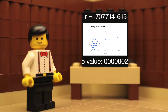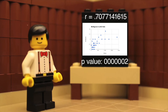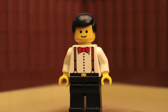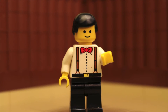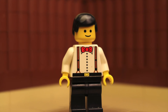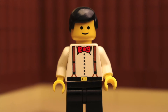So we decided to try plotting piece count against the number of minifigures instead. The new r-value came out to 0.7077141615, indicating a much stronger correlation than before, and a p-value much smaller than alpha equals 0.05. Since the p-value, 0.0000002, is less than alpha equals 0.05, we reject the null hypothesis and conclude that there is enough evidence to support the claim that the slope of the linear regression line made between piece count and minifigures is not equal to zero.